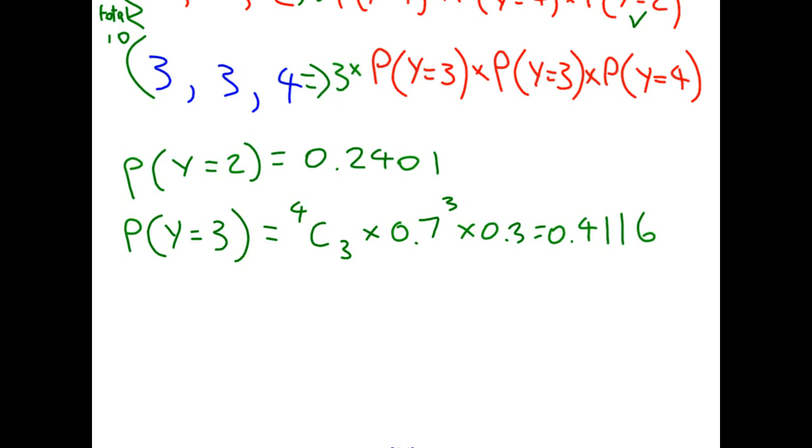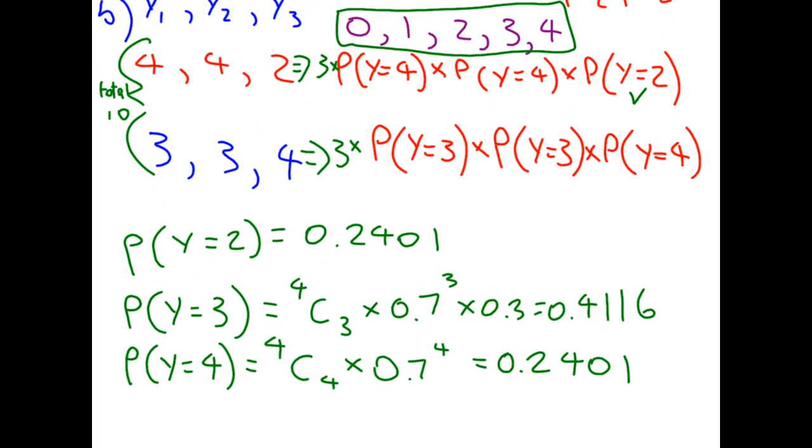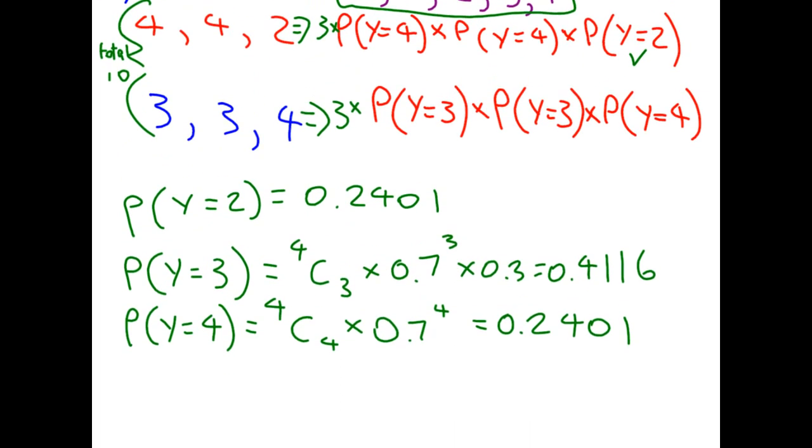We also want the probability that y equals 4. So we have 4 choose 4, which is just going to be 1, and 4 successes. Basically 0.7 to the power of 4, which is 0.2401. We now substitute these values into formulas that we came up with.